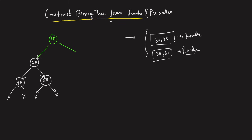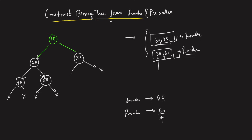Now for 10's right, the pre-order traversal is 30, 60. So 30 is the root of the right sub-tree. For 30, looking at the in-order, the left will contain 60. So the left's in-order is 60 and its pre-order is also 60. On the right of 30, there is nothing, so the right is null. Going into 30's left: 60 becomes the root, 60's left is null, 60's right is null, and 60 is returned. The 30 sub-tree is completed, 30 is returned, and 10's right points to 30. Ultimately the root of the entire tree is returned as the final answer.